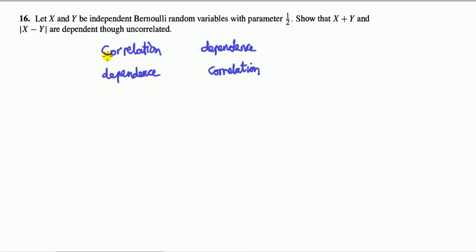Conceptually it's a good question because of the following. We know if we have two random variables and they're correlated, that means they are dependent. But the following is not true: if two variables are dependent, it doesn't follow — although it could be true — but it doesn't have to follow that they must be correlated. And that's what this question is. So it gives us two random variables X and Y, they're both Bernoulli and independent. Then we construct two variables: the sum of the two random variables and the absolute value of the difference. We have to show that these two new random variables are dependent but uncorrelated.